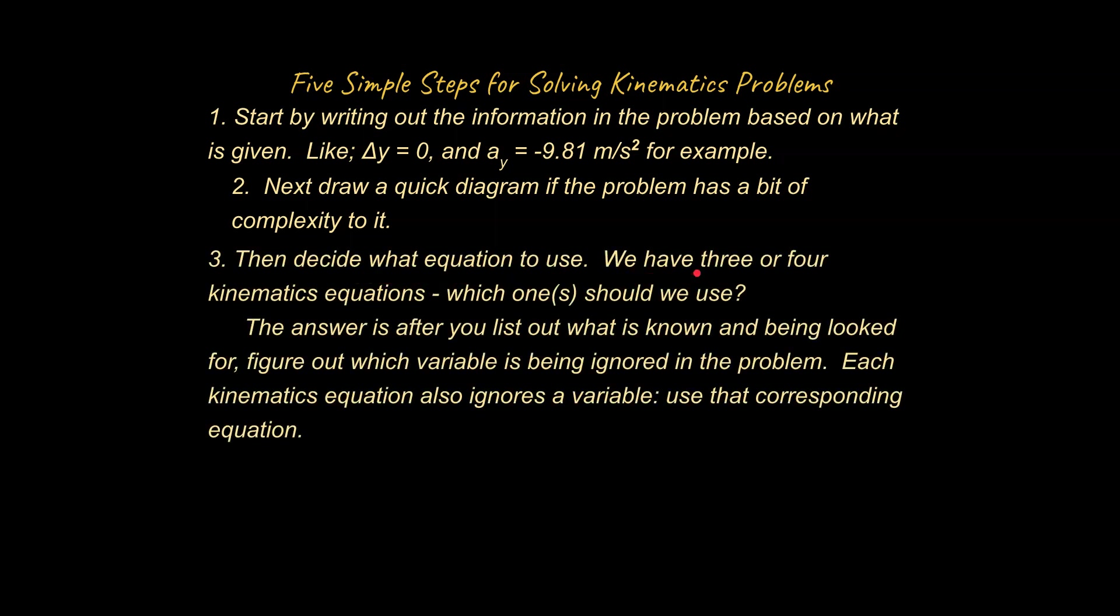Okay, third, decide which equation to use. We have three or four kinematics equations. Which one or ones should we use? The answer is after you list out what is known and being looked for, figure out which variable is being ignored in the problem. Each kinematics equation also ignores a variable. Use that corresponding equation to start the problem with. So, for instance, if there's no mention of time, absolutely no mention of time, meaning you're not given time, and you're not asked to solve for time, then use the kinematics equation that ignores time. That's the one you're going to start with.